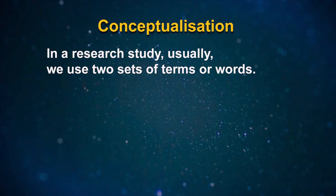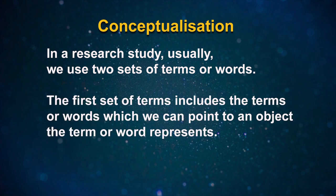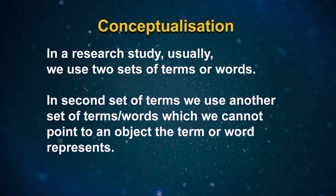In this lesson, we are going to discuss one of the most important activities of social science research, namely conceptualization. In a research study, we usually use two sets of terms or words. The first set includes terms or words which we can point to an object the term represents. In the second set, we use terms or words which we cannot point to an object the term represents.